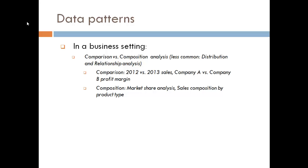A composition chart type, as the name suggests, is a chart type where it takes a data series — say of revenue, sales, or profits — and decomposes it into a finer granularity such as geography or product line. What it allows us to do is essentially drill down into that data series and see how it is defined, or as the name implies, how it's composed.